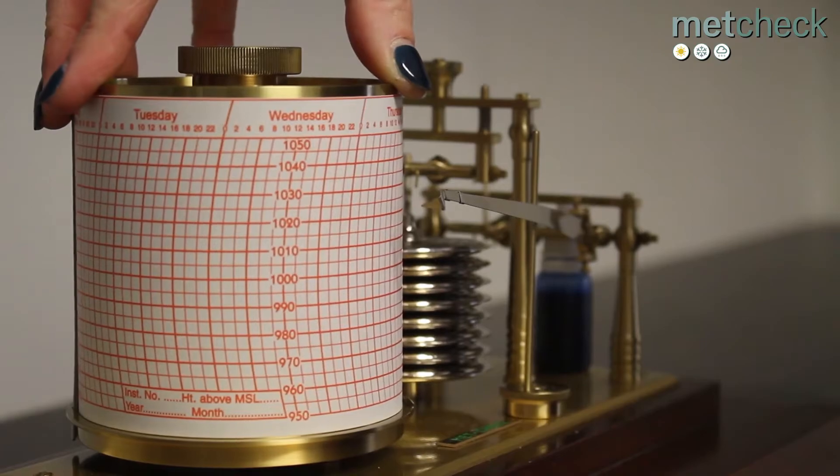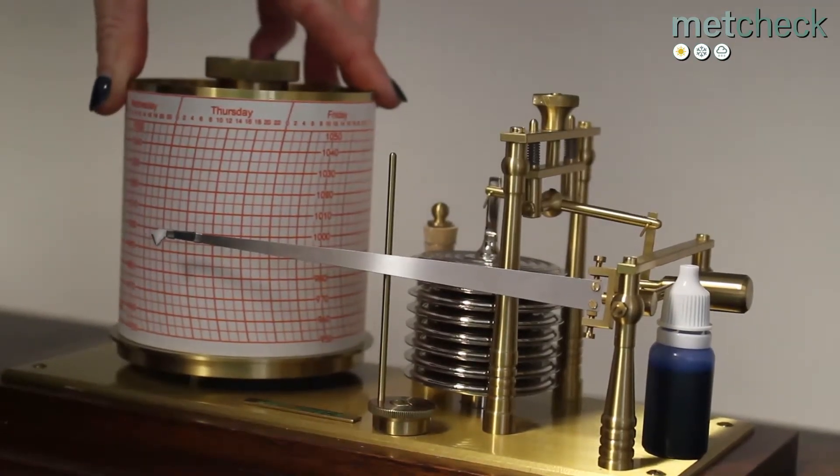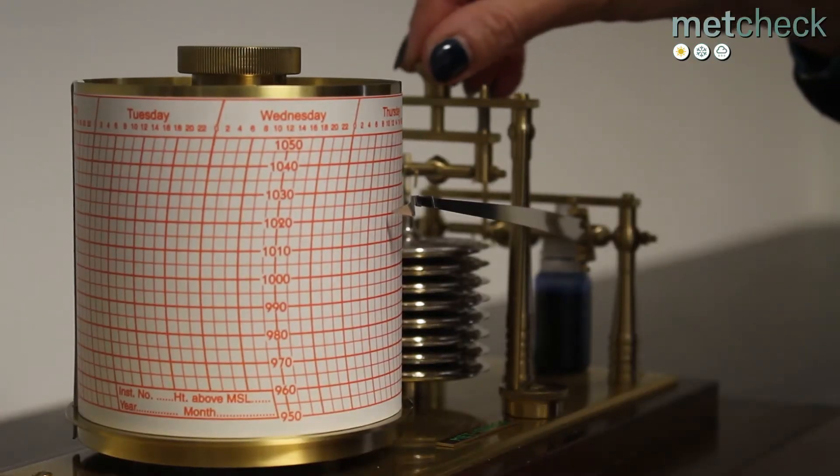Then carefully turn the barograph drum clockwise until the barograph arm is lined up to the correct day and roughly to the correct time.